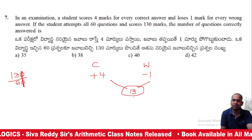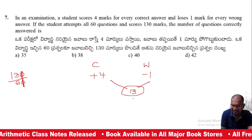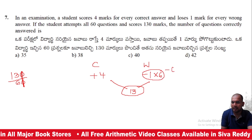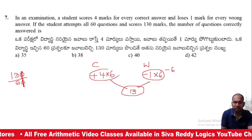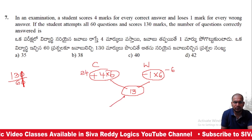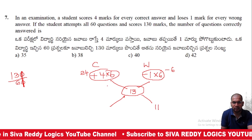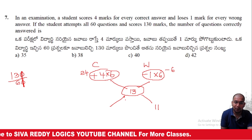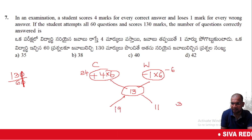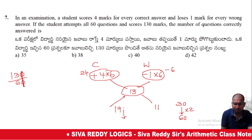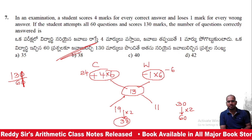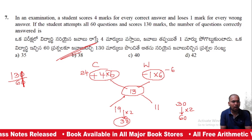Setting up equations: let correct = x. Then 4x − (60 − x) = 130, so 5x − 60 = 130, giving 5x = 190, x = 38. Checking: 38 correct, 22 wrong — 4×38 − 22 = 152 − 22 = 130. The answer is Option B.